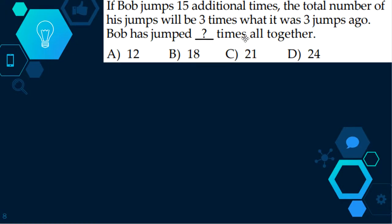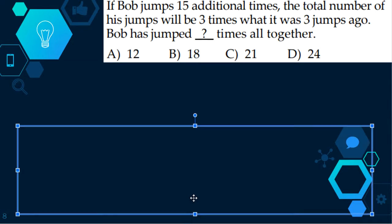The next question: If Bob jumps fifteen additional times, the total number of his jumps will be three times what it was three jumps ago. Bob has jumped blank times altogether. What we have to do is get an answer and add fifteen to that answer and divide it by three, and we have to get that answer minus three, and we should get the same exact number. Let's try with twelve. Twelve plus fifteen is twenty-seven, and twenty-seven divided by three is nine, and twelve minus three is nine. Because they're both the same number, our answer would be A.